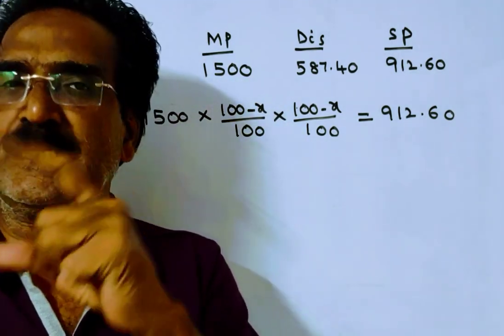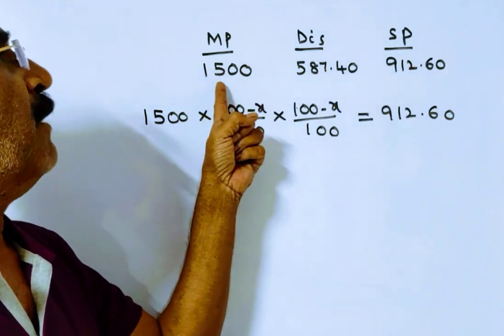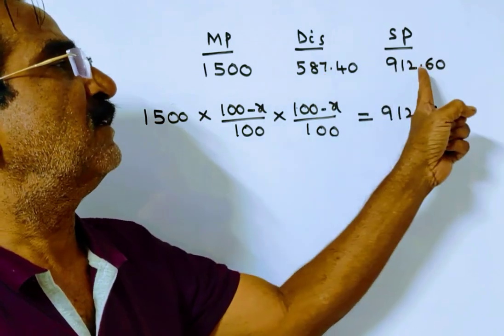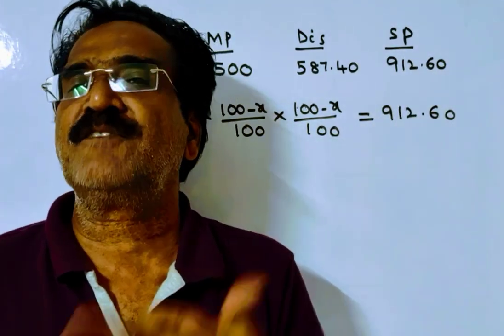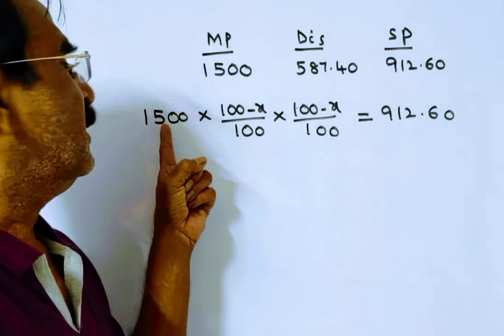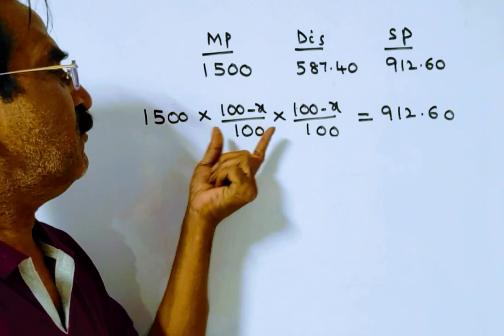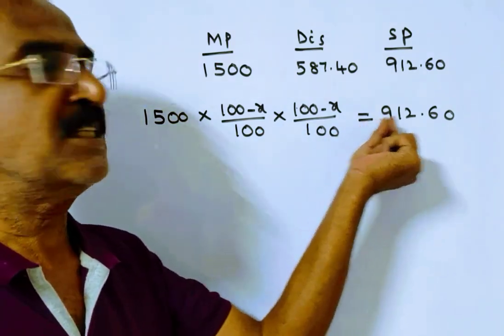Two successive discounts of x percent each. And this 912.60 is the selling price after two successive discounts of x percent each. So market price minus discount - after two successive discounts, the selling price is this.